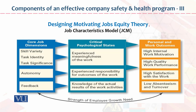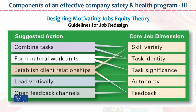Ager yeh paancho cheezain job mein exist kar rahi hain to automatically organization ke andar individual imply ki performance pahle se better hogi. Designing motivating job equity theory — Job Characteristics Model, core job dimensions: skill variety, task identity, task significance, autonomy, feedback — cobi paanch point ham ne discuss kiya. Critical psychological states — these are then here. As a result: high internal work motivation, high quality work performance, high satisfaction within the work, low absenteeism and turnover.